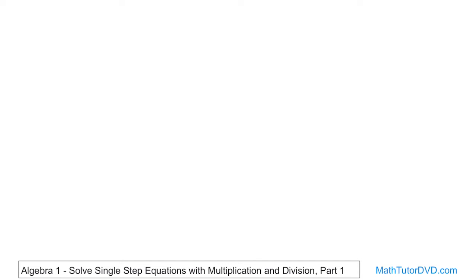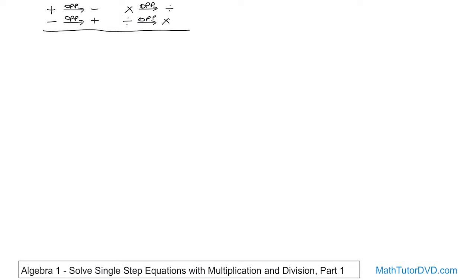When we're solving equations, when we have addition, the opposite is subtraction. And if you have subtraction going on, the opposite is addition. So let me ask you a question: if you have multiplication in a problem, what do you think the opposite is going to be? The opposite of multiplication is division. And if you have division going on, the opposite is multiplication, because multiplication and division are opposites of one another. That's what we're going to use to solve all of these problems.